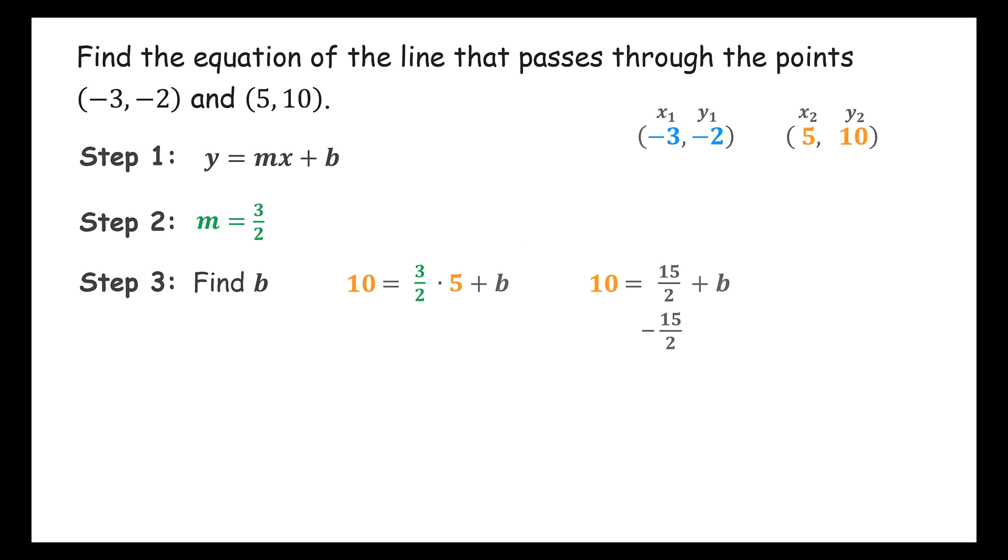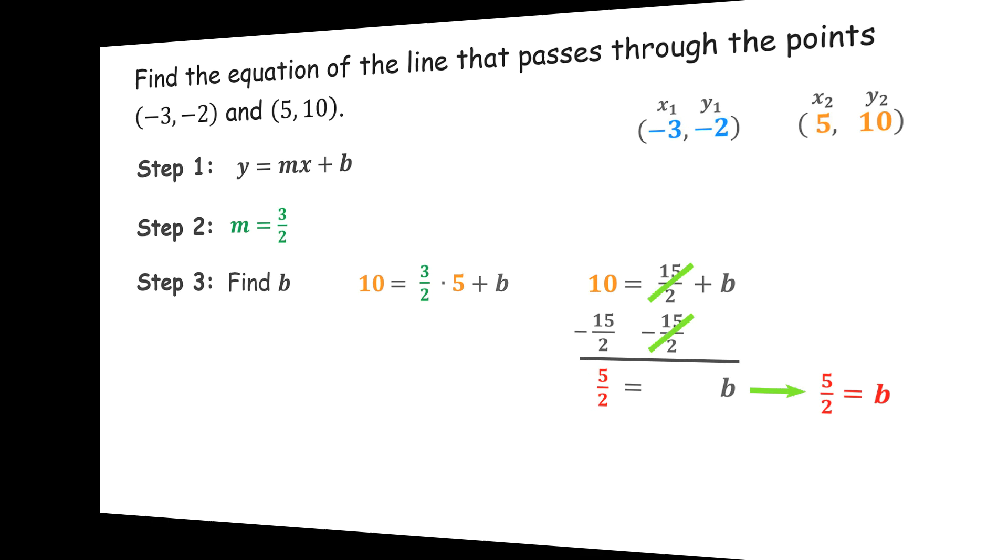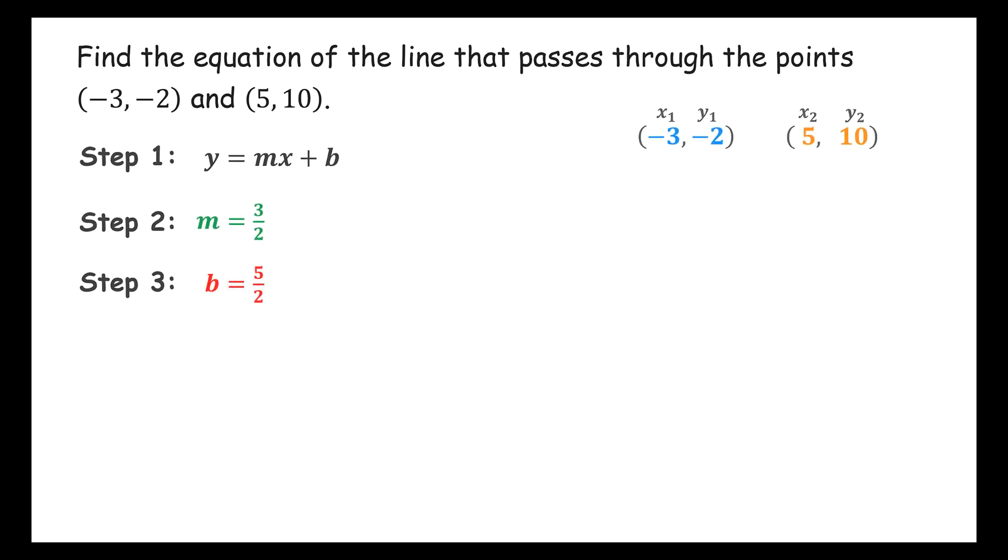To solve for b, we subtract 15 halves from the right side. And to keep the equation balanced, we subtract 15 halves from the left side as well. Working from left to right, we calculate 10 subtract 15 halves to get 5 halves on the left side of the equation. Then we bring down the equal sign. And since 15 halves subtract 15 halves is just 0, we cross them out and bring down the b on the right side. This gives us 5 halves equals b, or b is equal to 5 halves.